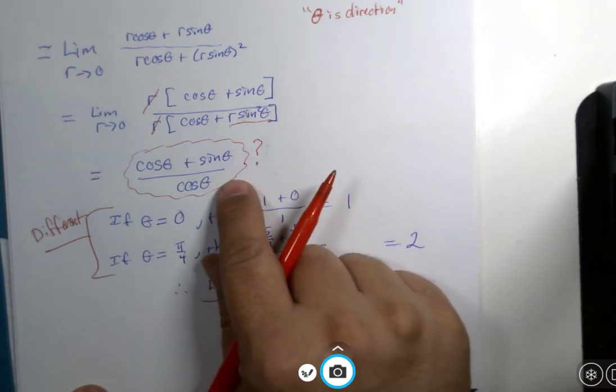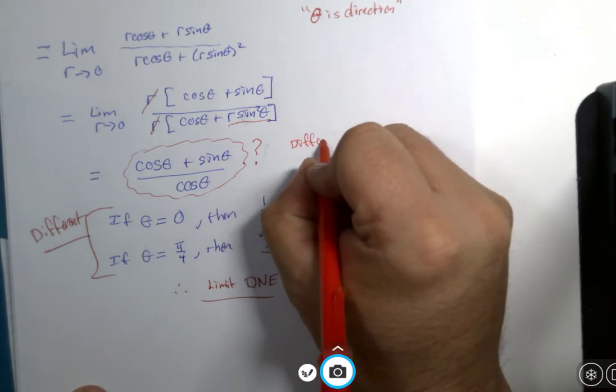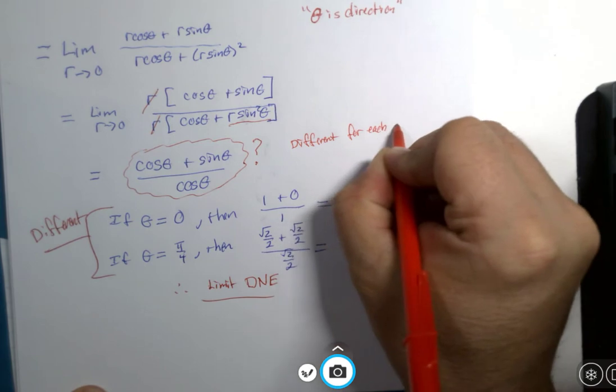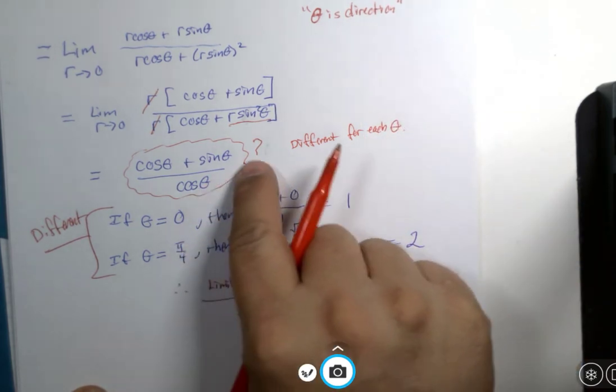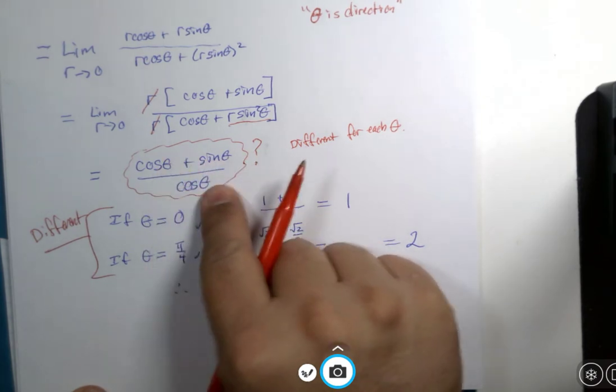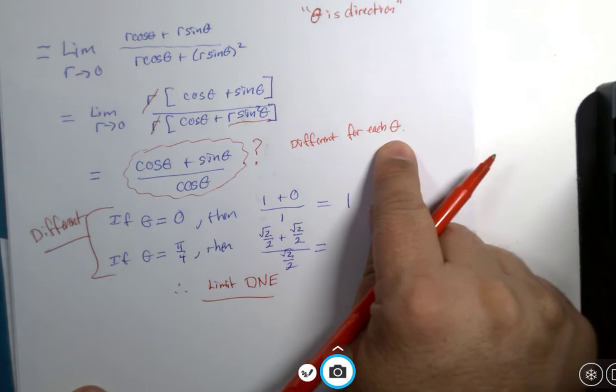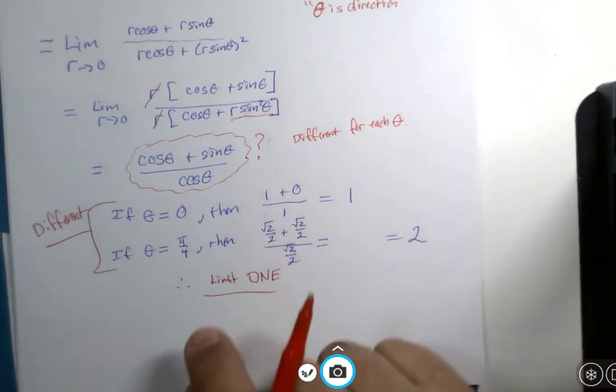What this expression is saying is, it is different for each theta. If the limit was a number like 5, this fraction would have been 5. This fraction has a variable in it, which means it's different at different values of theta. So that is sufficient by itself to show the limit doesn't exist.